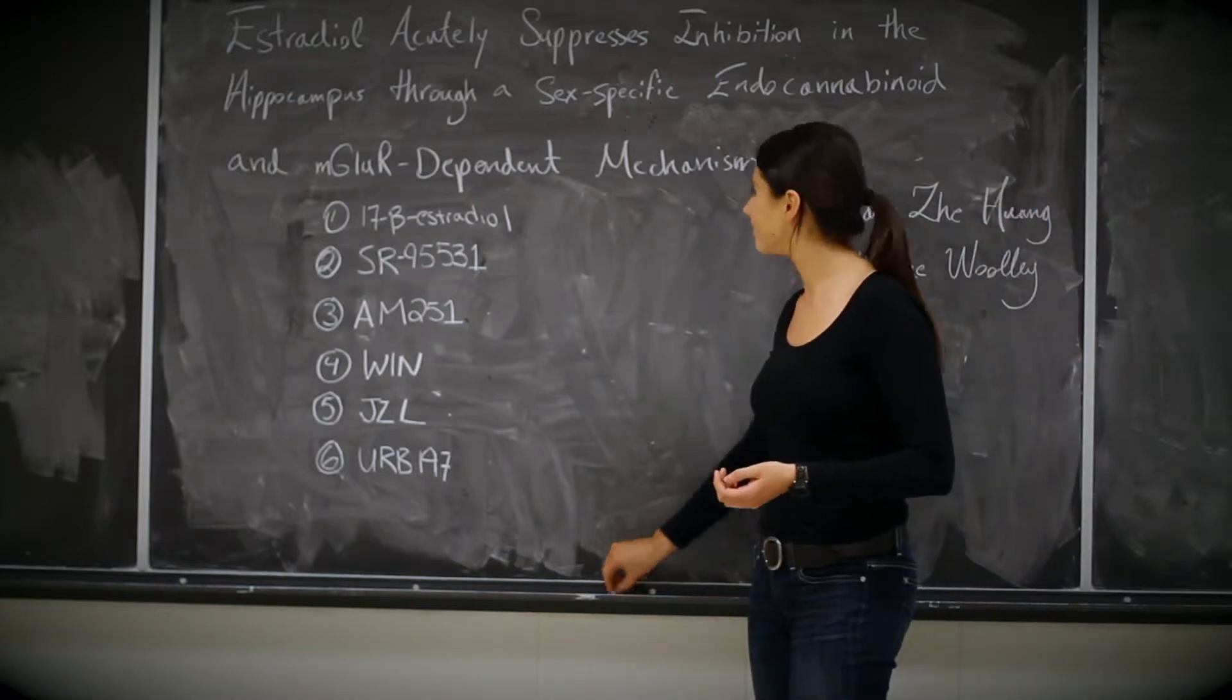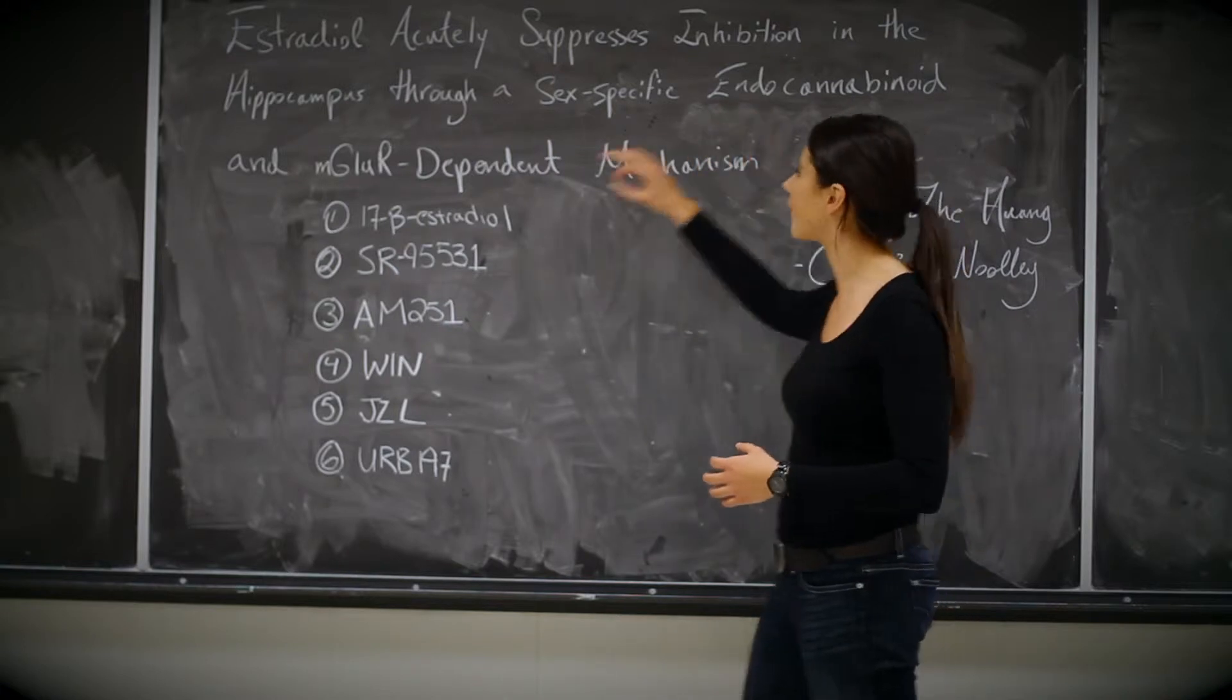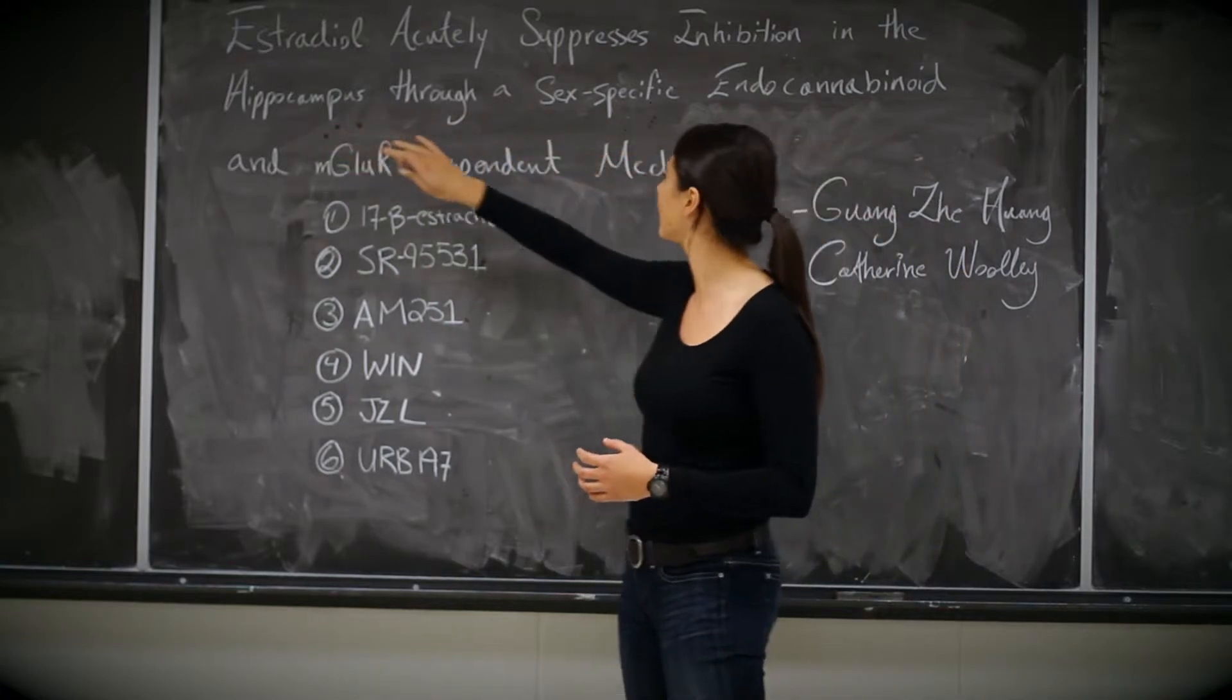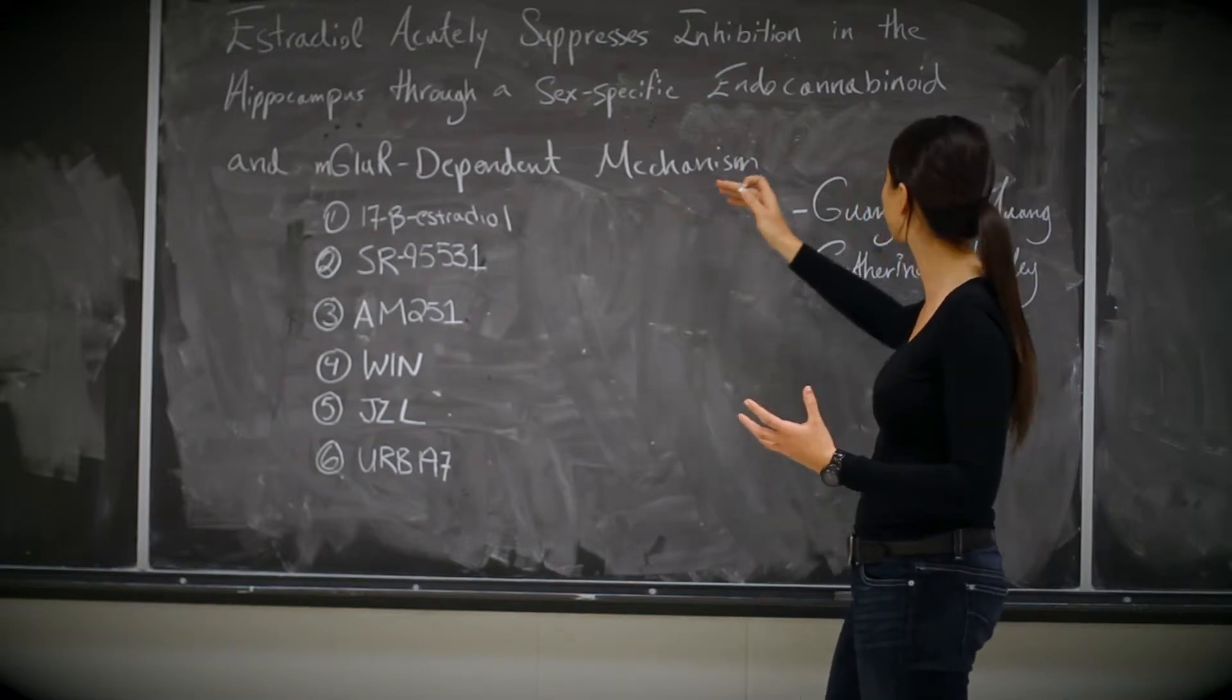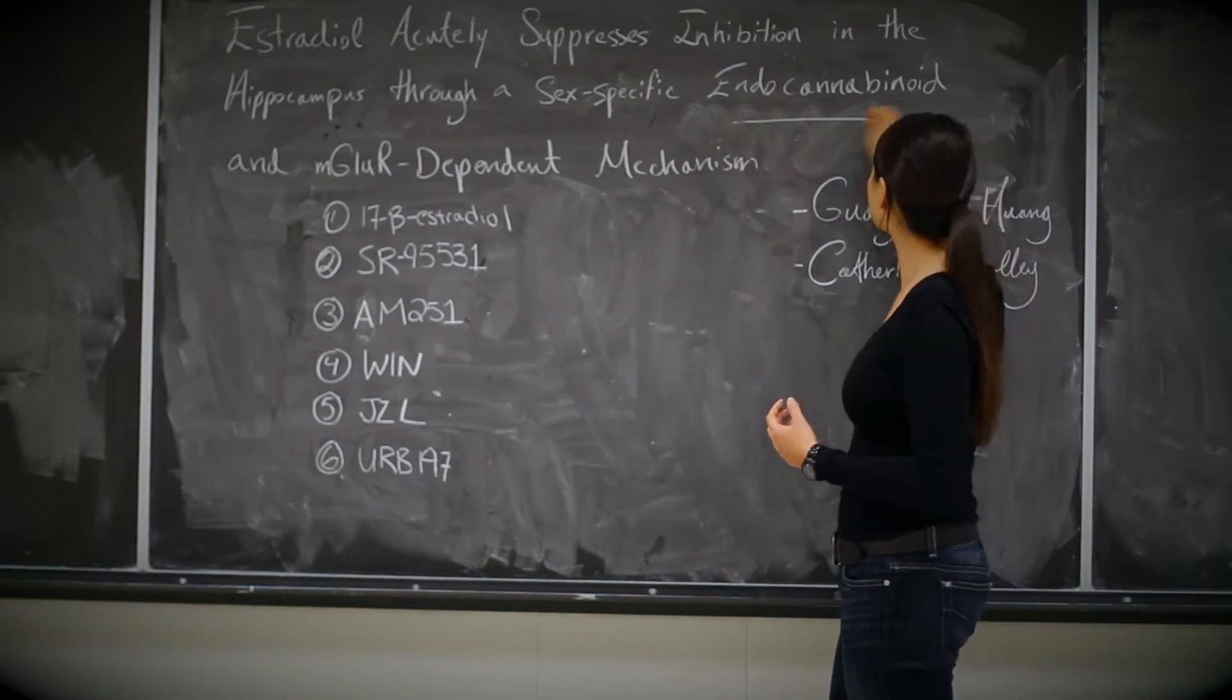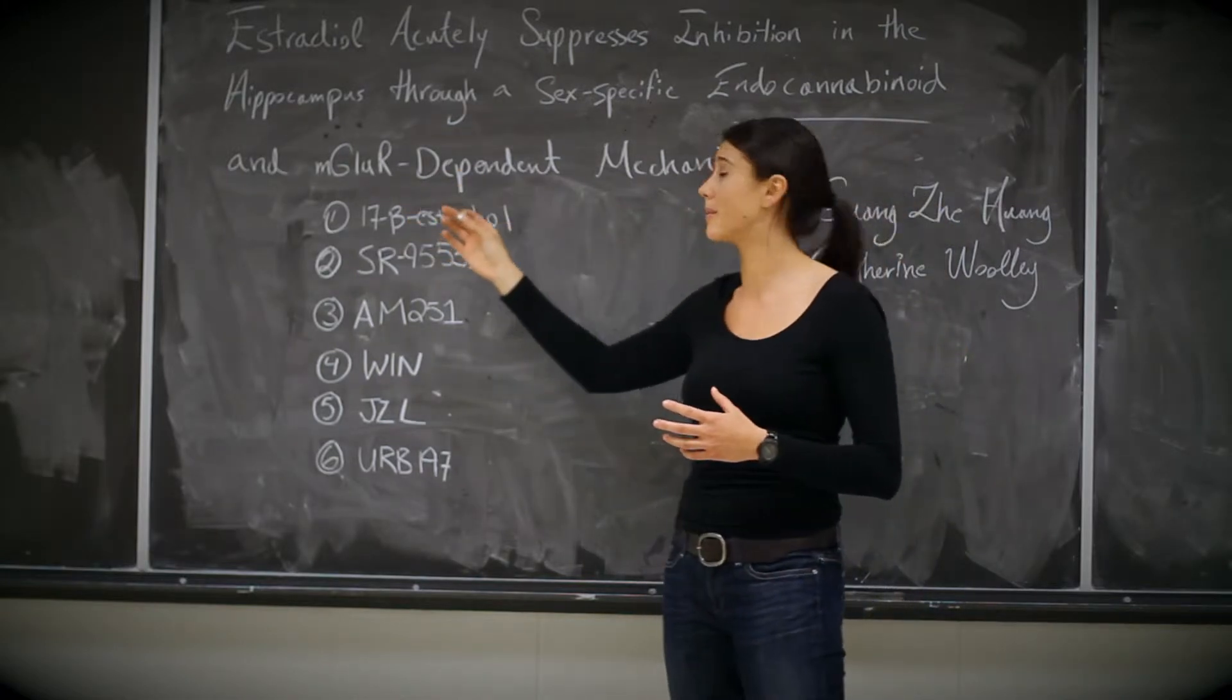So we know that estrogen or estradiol is going to be inhibiting some sort of firing of neurons in the hippocampus. This is a sex-specific mechanism, whether it's males or just females. Somehow endogenous cannabinoids are involved as well as metabotropic glutamate receptors.